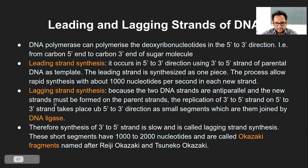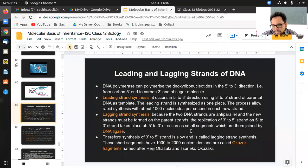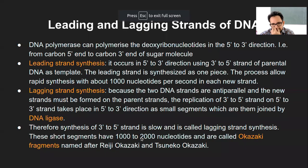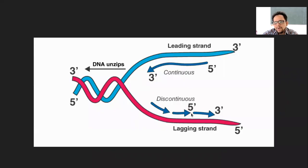The trick is with the lagging strand. Because the DNA strands are anti-parallel and the new strand must be formed on the parent strand, the replication of the 3' to 5' strand takes place in the 5' to 3' direction. Irrespective of which direction the parent DNA strand is, DNA polymerization will happen only in the 5' to 3' direction. Whatever strands are being formed, they will be joined by an enzyme called DNA ligase.